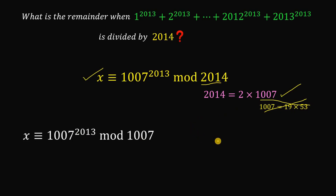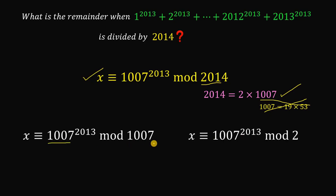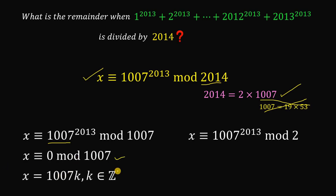Solving the first one: since 1007 is a multiple of 1007, this is just 0 mod 1007. So we can say that x is a multiple of 1007, or x = 1007k where k is a positive integer.